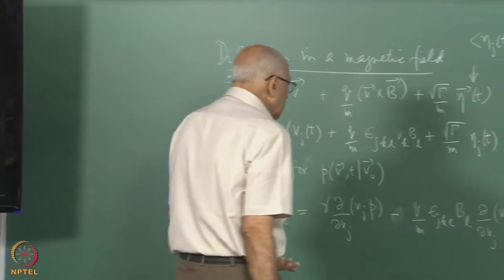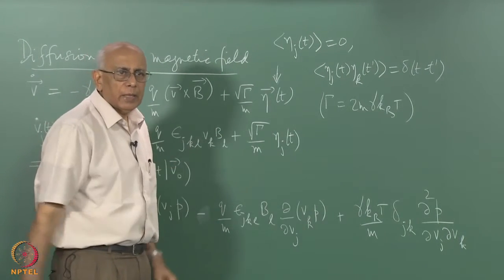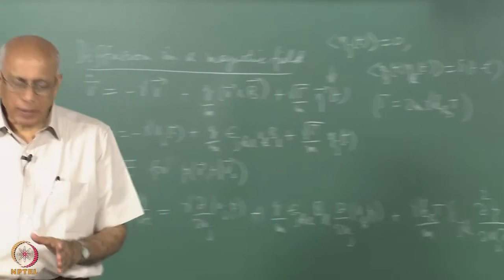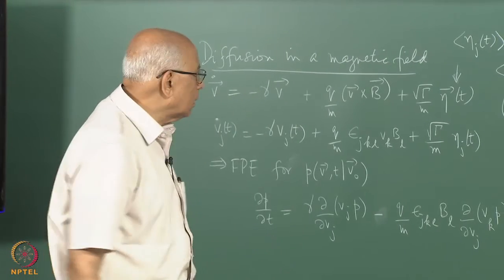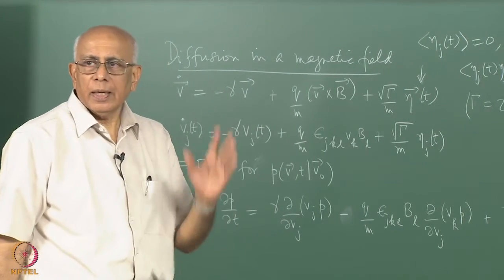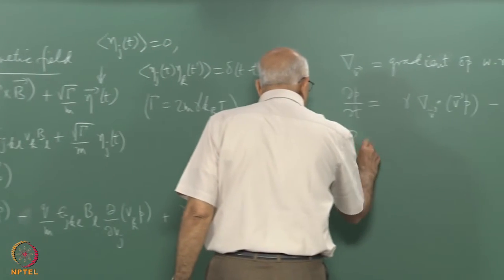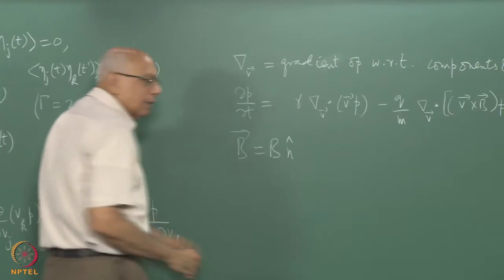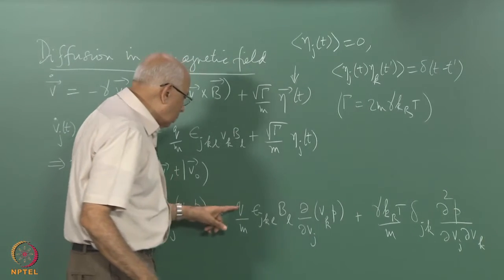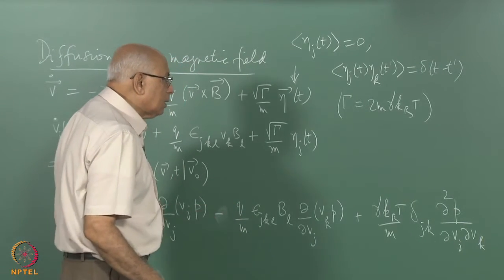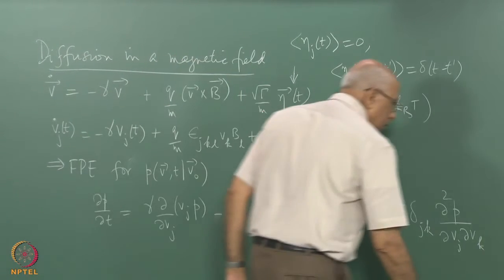A little simplification: it is convenient to take the magnetic field in an arbitrary direction rather than specializing to the z-direction, so the structure comes out more clearly. Let us say B equals B times a unit vector n in some arbitrary direction. Then we have q B / m appearing in the equation.